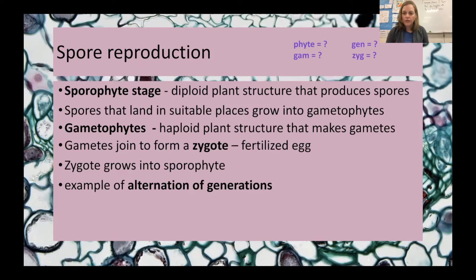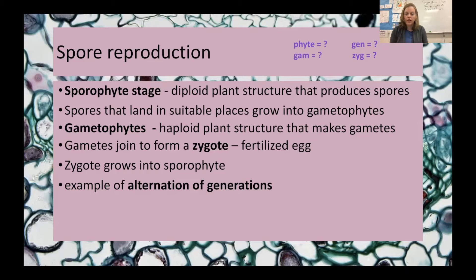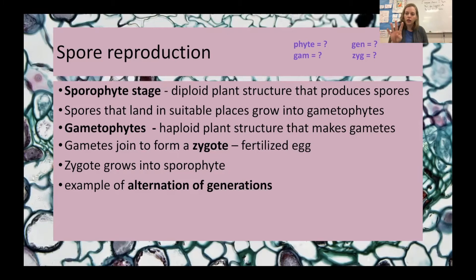We have an algae called charaphycean algae, or Chara for short. Chara is long and multi-celled but only has one set of DNA, so it's haploid. Since it's haploid, it makes its eggs and sperm by mitosis — just copying that one set of DNA directly. Chara releases its eggs and sperm into the water, hopefully along with other Chara, and those eggs and sperm fertilize one another to produce a diploid zygote. This zygote is the only diploid cell for this organism; it immediately divides by meiosis to give four haploid spores, which land and grow into new algae.